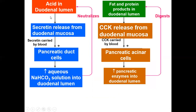To summarize hormonal control: acid in the lumen leads to secretin secretion from the duodenum; secretin carried by the blood acts on the pancreatic duct cells to increase aqueous secretion. Fat and protein in the lumen lead to CCK release; CCK carried by the blood acts on pancreatic acinar cells to increase pancreatic enzyme secretion, digesting protein and fat, while secretin neutralizes the acid.